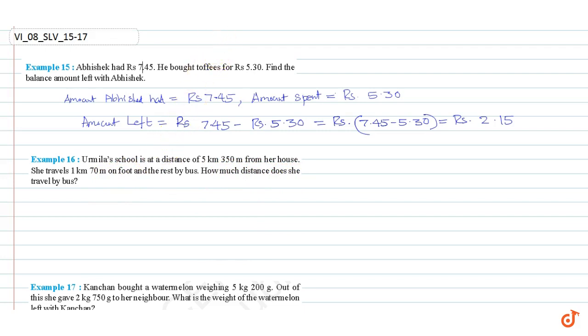We know that 1 km is equal to 1000 m. Therefore, total distance is equal to 5 km.